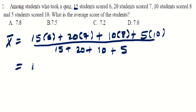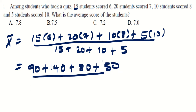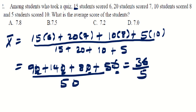Numerator: 90 + 140 + 80 + 50 = 360. Denominator: 50. Mean = 360/50 = 7.2. The answer is C.